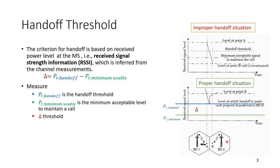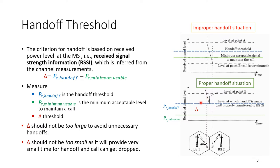In the proper scenario, before the signal reaches the minimum required level, it crosses the handoff threshold. At that point, the measurement jumps instantaneously to base station number two, and we are now measuring from the new base station. We remain above the minimum required level. Delta should not be too large, to avoid unnecessary handoffs — especially with shadowing and multipath. On the other hand, if delta is too small and the user is moving very quickly, we might reach the minimum required level before handing off.